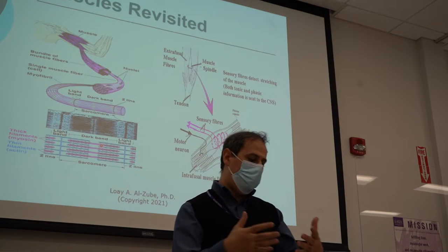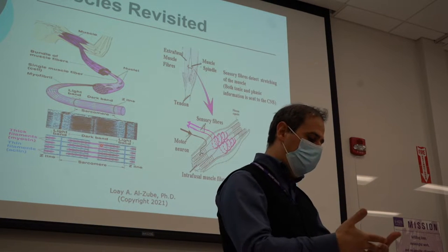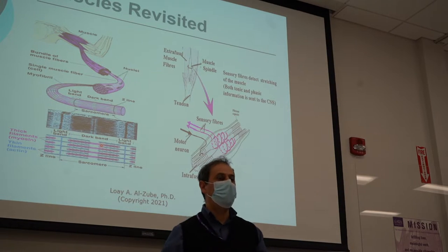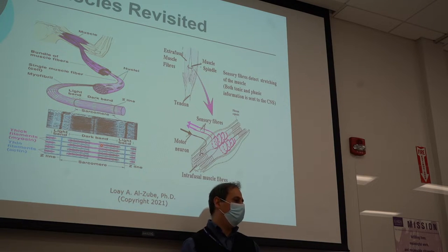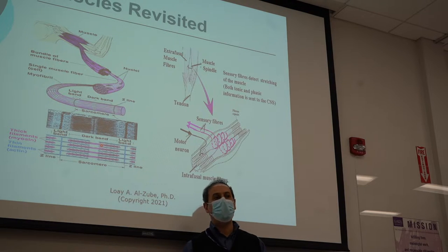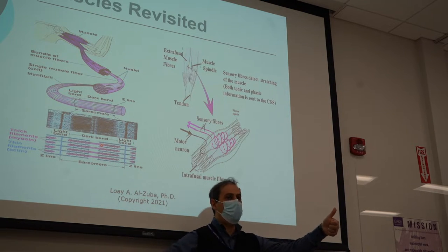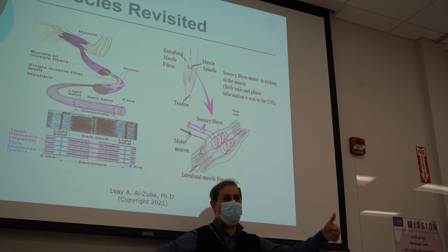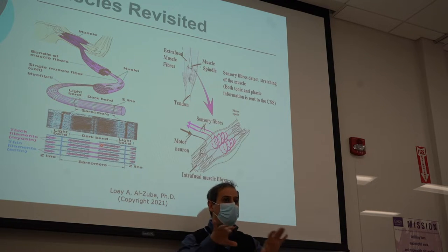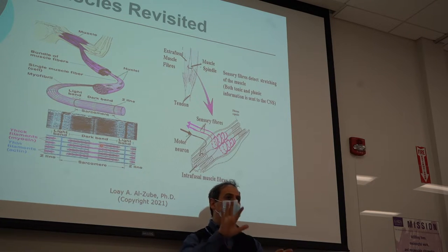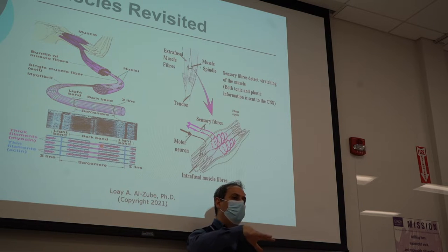A muscle fiber is one cell. Now let's define the motor unit. A motor unit is a nerve that's coming out from the spinal cord, and all the muscle fibers — all the cells that that nerve is touching — that's called the motor unit.